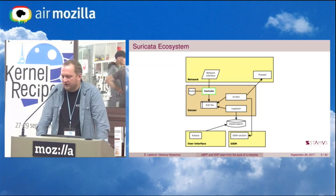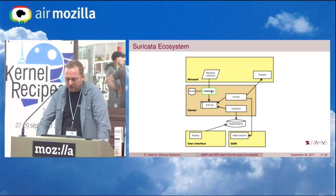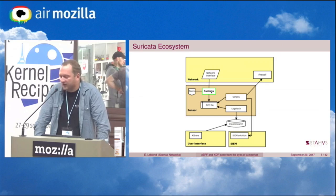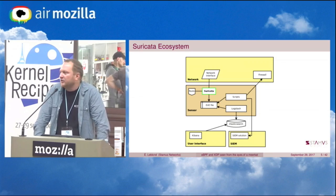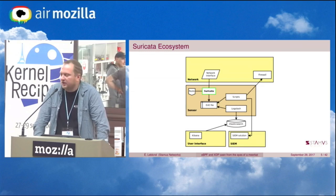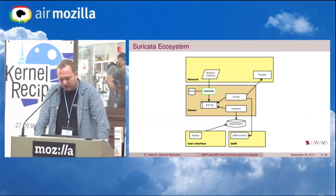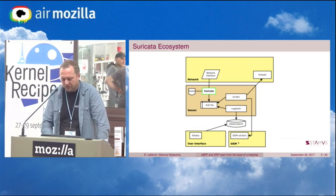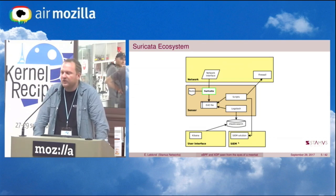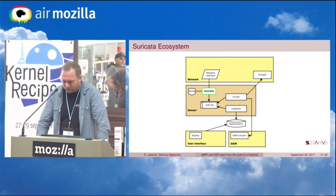Suricata is this small part that takes the data and some rules — a kind of policy of what is known to be bad — and using that, it generates a file or pushes data outside that can be used by other people to analyze the risk on the network and to know what is going on.